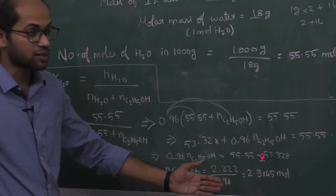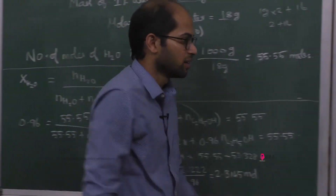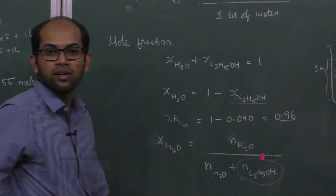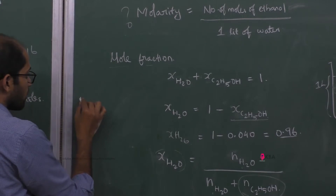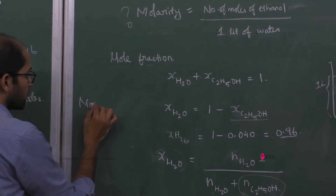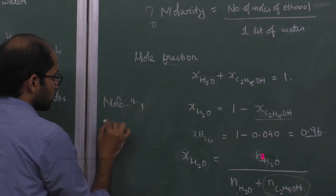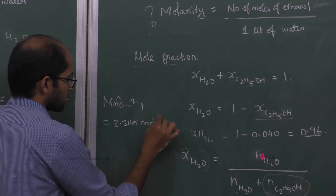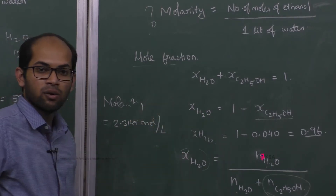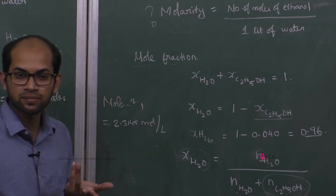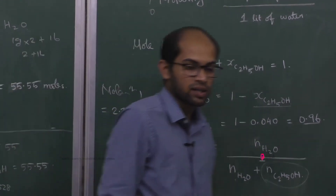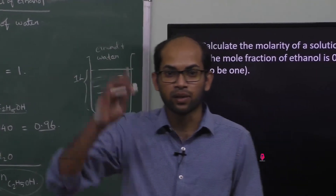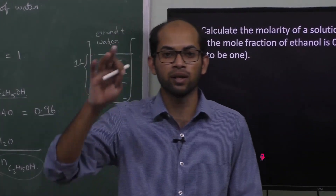Ethanol is 2.3145 moles per liter of solution. One liter contains 2.3145 moles of ethanol. Therefore, the molarity is 2.3145 M. Capital M means moles per liter. That's the final answer.